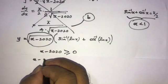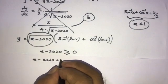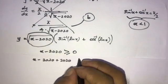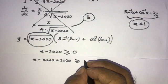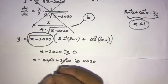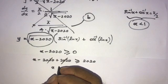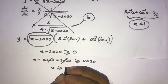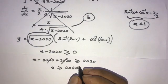So x minus 2020 plus 2020 is greater than or equal to 2020. Now these terms get cancelled, so x is greater than or equal to 2020. Therefore